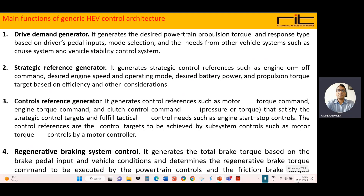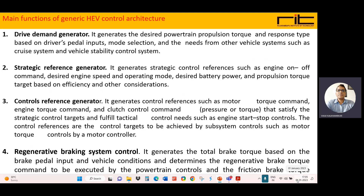The third function is the control reference generator. It generates control references such as motor torque command, engine torque command, and clutch control command that satisfy the strategic control targets and fulfill tactical control needs like engine start-stop controls. These control references are the control targets to be achieved by subsystem controls such as motor torque control by motor controller.